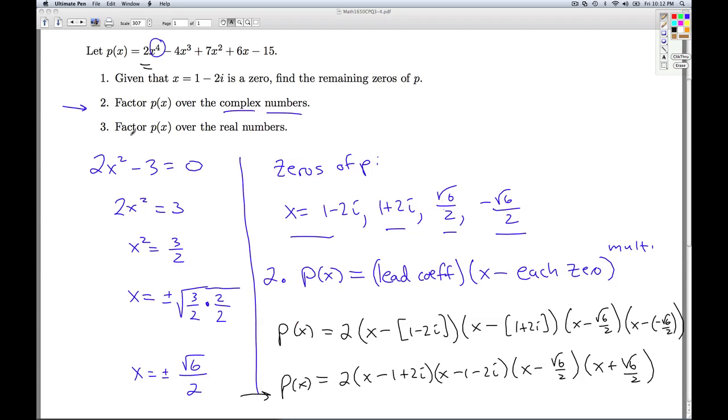Number 3, we're asked to factor P(x) over the real numbers, which means we have to break it down as far as we can using only real numbers, not using any imaginaries. So once again, we use the complex conjugates theorem. Since we always get the non-real zeros in conjugate pairs, when I multiply their corresponding factors together, the i's are going to go away and I'll be left with one of those irreducible quadratics. Even though these don't look nice and friendly, they are in fact real numbers.